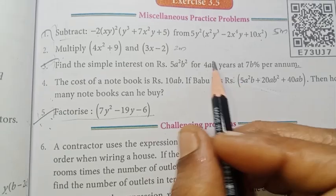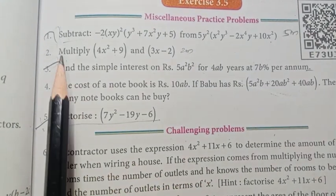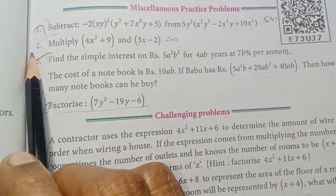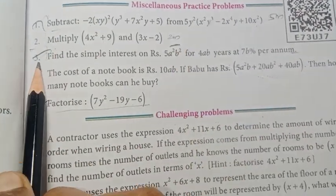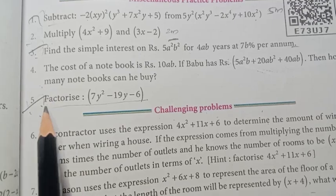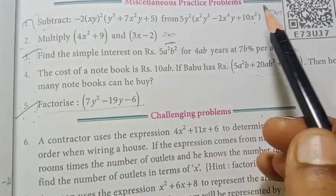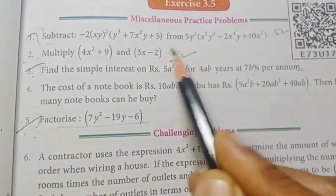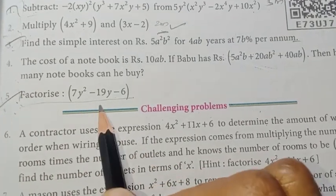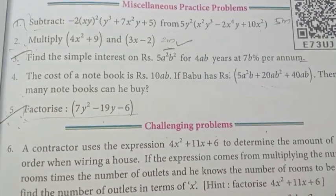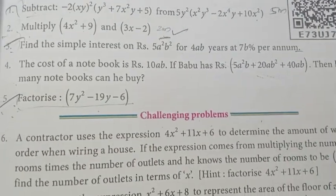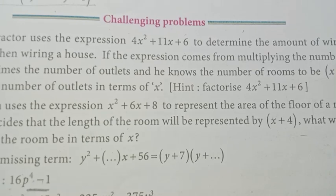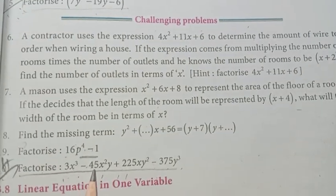Objective type full. Page number 97, exercise 3.5: first one important, second one important, third one important, fifth one important. Questions 1, 2, 3, and 5 are important. You can add this factorize problem. This is the important question.